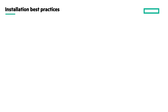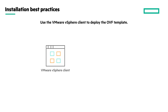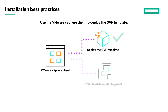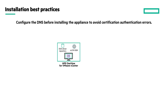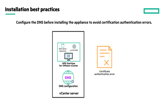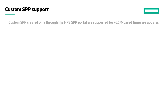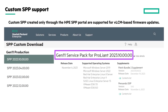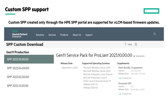Here are some best practices to remember. Hewlett Packard Enterprise always recommends using the VMware vSphere client to deploy the OVF template. Note that ESXi host-level deployment is not supported. If VMware vCenter or HPE OneView for VMware vCenter is installed before configuring the DNS, you will most likely encounter certificate authentication problems that prevent the two from establishing the connection. Custom SPP created only through the HPE SPP portal are supported for VLCM-based firmware updates.